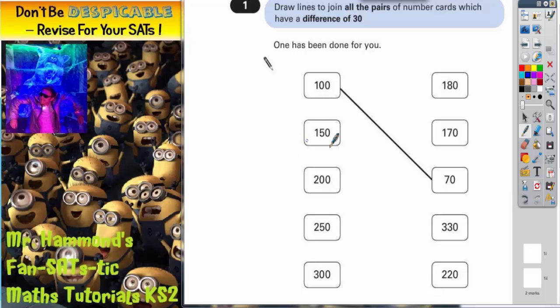So let's have a look at 150. Now for a number to have a difference of 30 with 150, it could either be 30 above 150, which would be 180, or it could be 30 below 150, which would be 120.